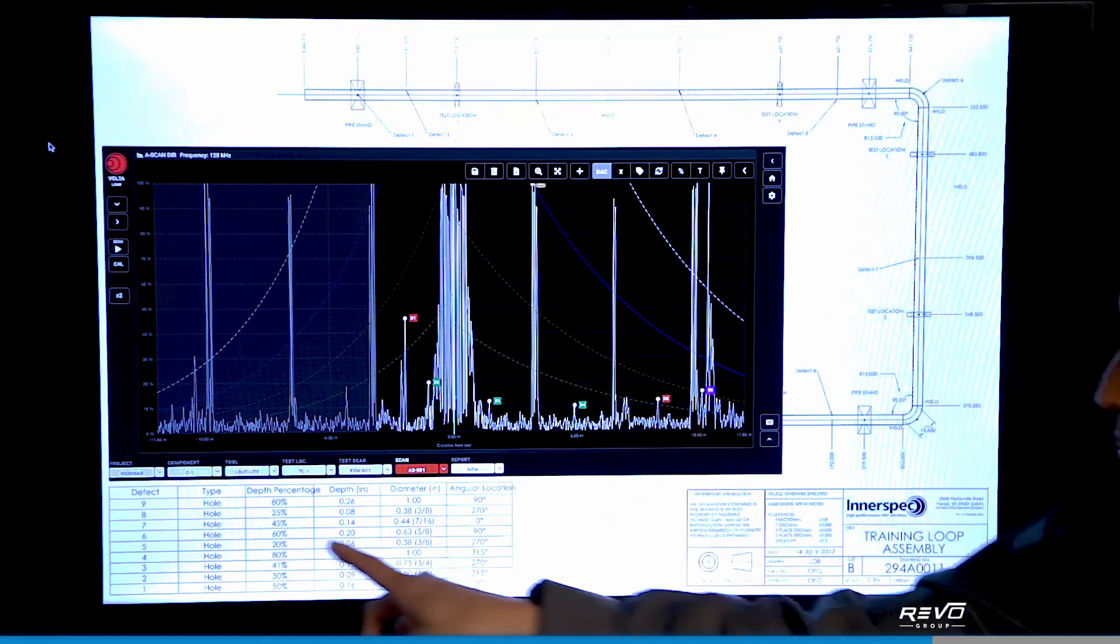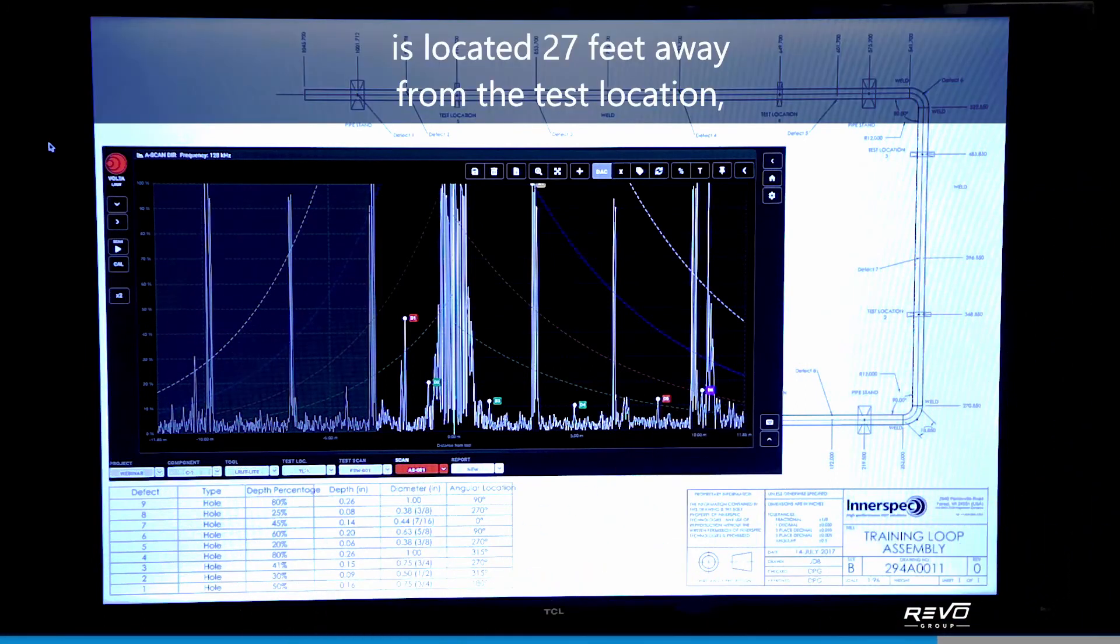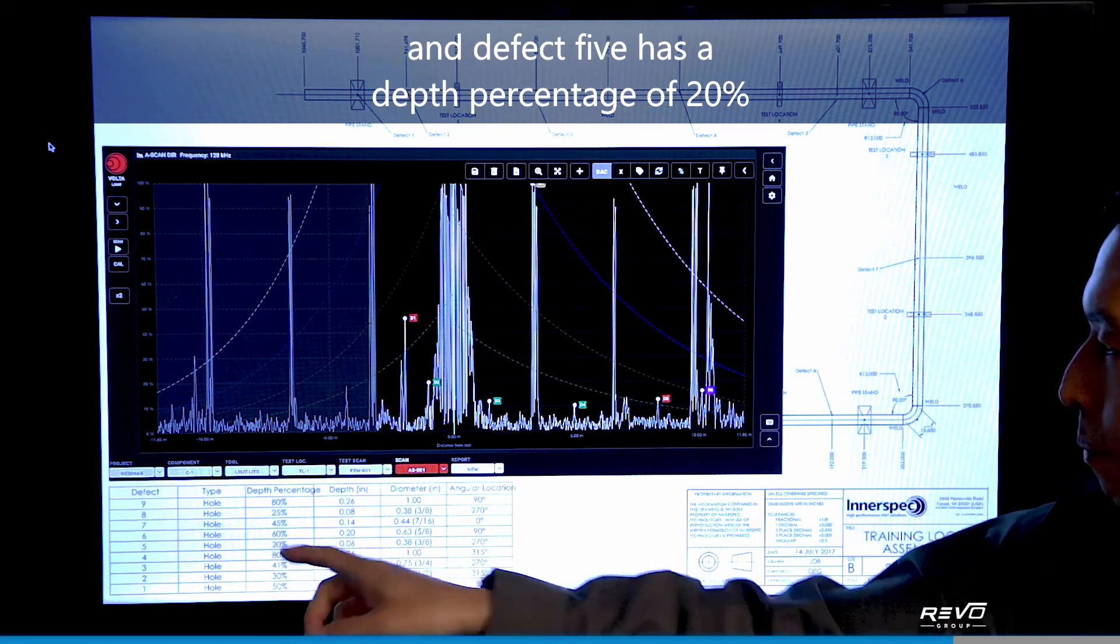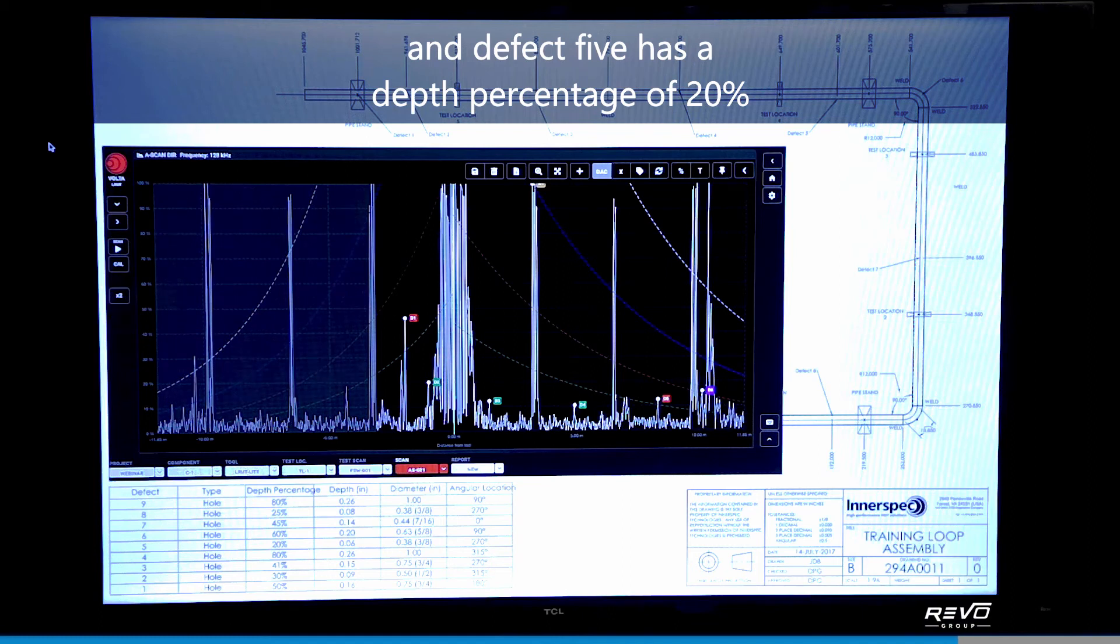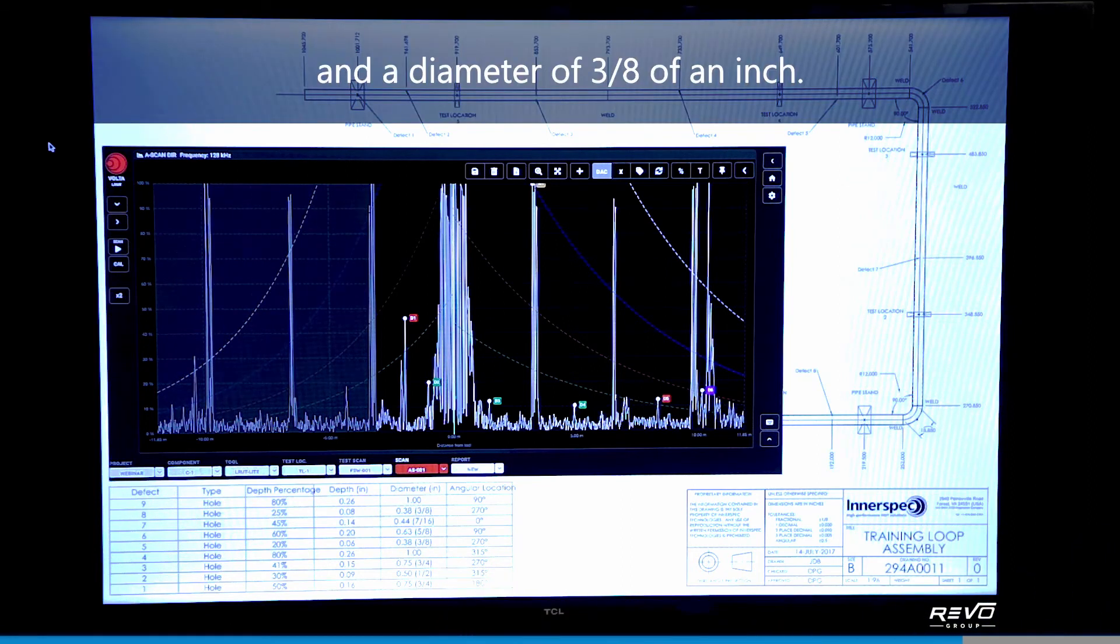Defect 5 is located 27 feet away from the test location and defect 5 has a depth percentage of 20% and a diameter of 3 eighths of an inch.